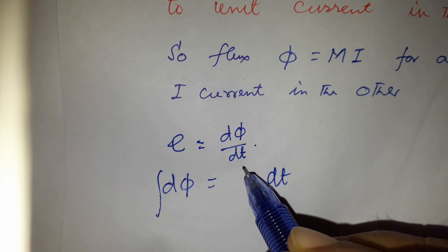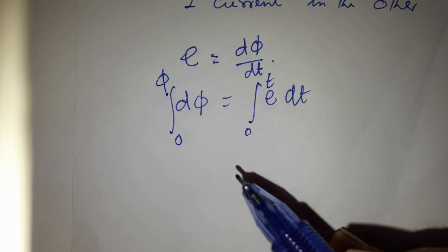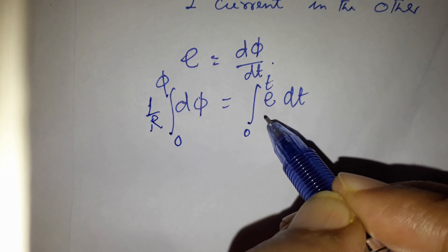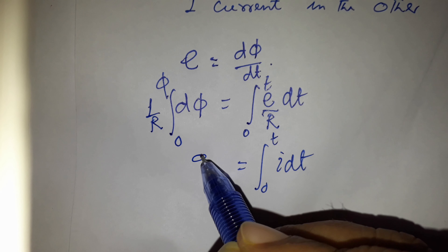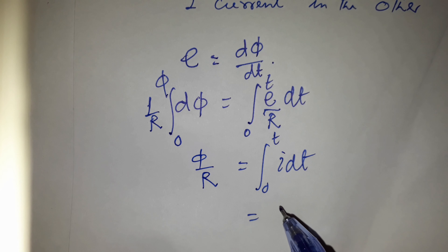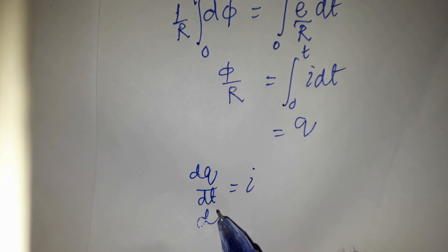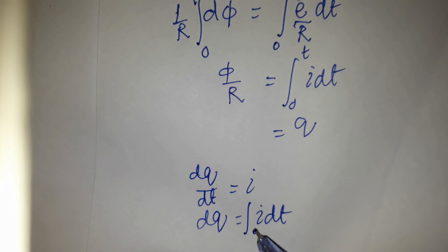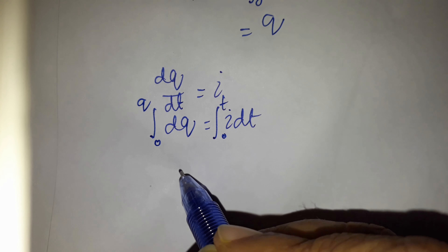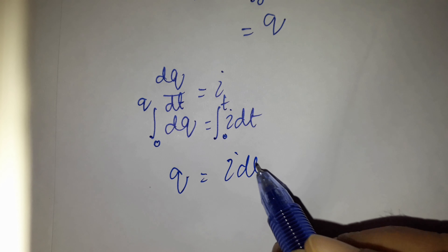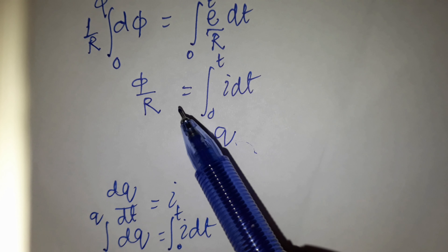Since dq/dt equals current I, we have dq equals I dt. Integrating from 0 to t, q equals the integral of I dt from 0 to t. Thus, charge q equals flux divided by R. Here, flux equals MI, so charge equals MI/R.